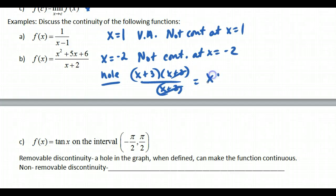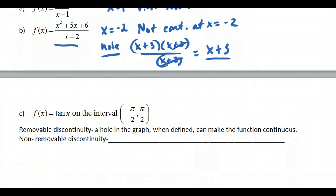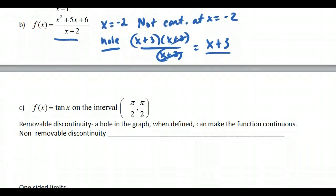We can cancel, so we're left with x plus 3. So this function f behaves everywhere the same as it does as x plus 3, except for at x equal to negative 2.